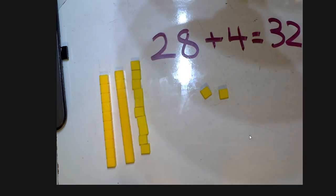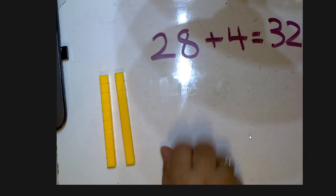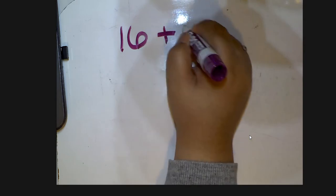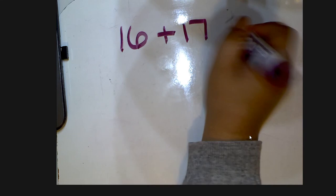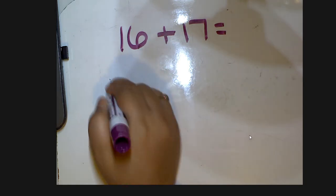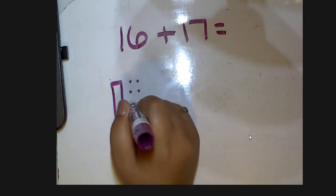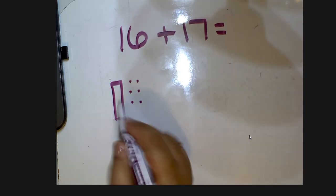If that doesn't make sense yet, that's okay — just keep watching and it'll come. Let's try another one, and this time I'm just going to draw a picture, which is something you can do at home. We're going to do 16 plus 17. So we'll model 16 on this side: one ten and six ones — one, two, three, four, five, six. Then we'll do 17 right underneath: one ten and seven ones — one, two, three, four, five, six, seven.